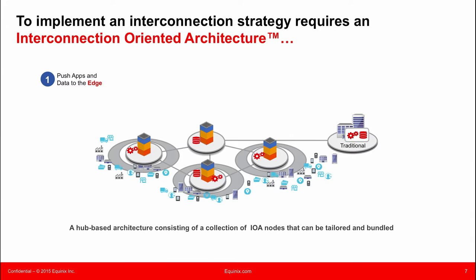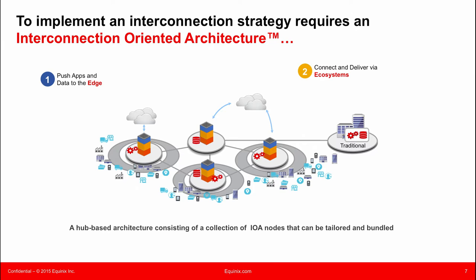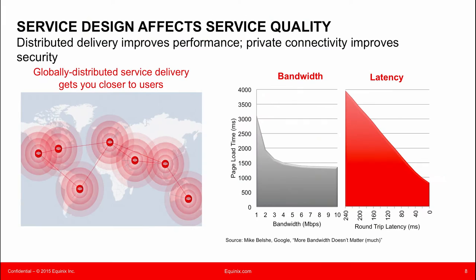What we suggest is really pushing apps and data to the edge, getting your users closer to those apps and to the data. Whether this is having a hub on the west, east, and central U.S., or whether we're talking about Singapore, London, and L.A. — whatever your particular infrastructure might require — distributing those apps out to the edge. Then overlaying the clouds on top of that, connecting those clouds and deriving the value of the cloud wherever it might be. And bringing data and analytics close to the users so you can make real-time decisions based on data coming in from various sensor points throughout the industry.